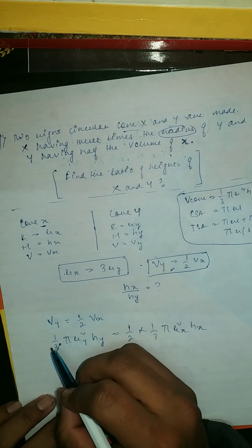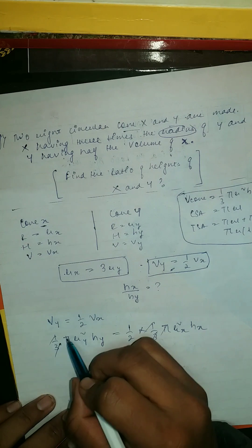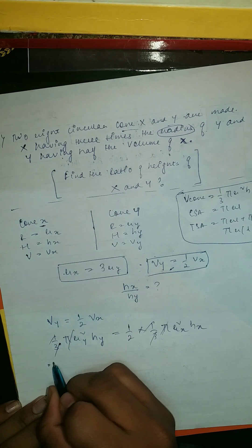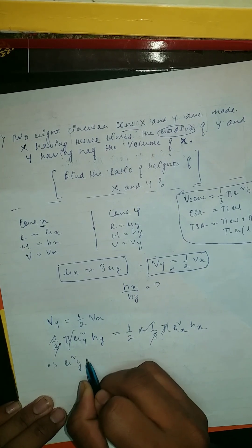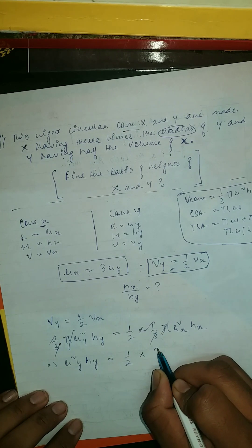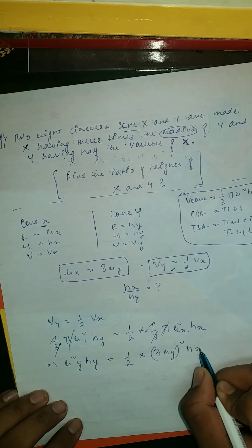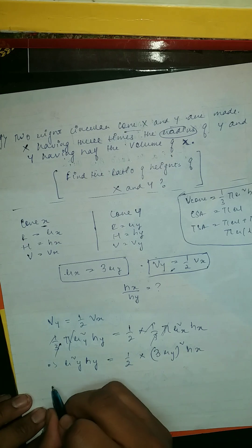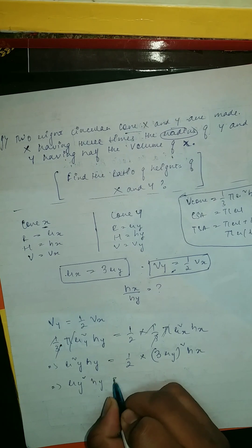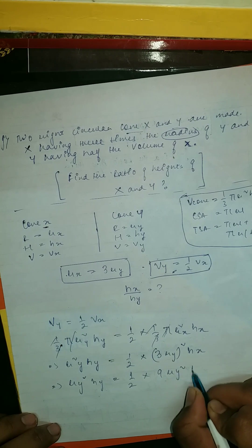Then ry² hy equal to 1/2 into 3rx². Then here this should be ry² hy equal to 1/2 into 9ry² hx. Then here this and this cancel.